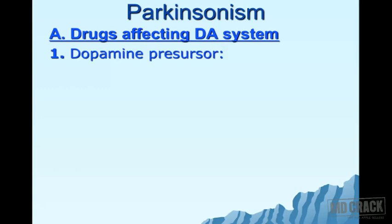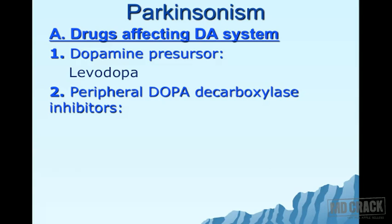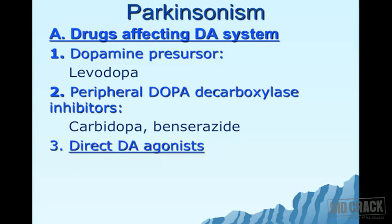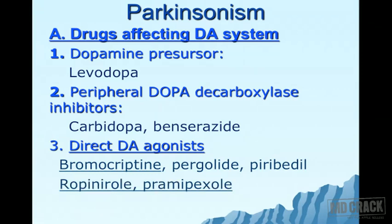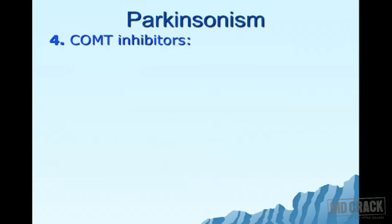Under drugs affecting the dopaminergic system: first is the dopamine precursor levodopa; next are peripheral dopa decarboxylase inhibitors — carbidopa and benserazide; then direct dopaminergic agonists that cross the blood-brain barrier and stimulate dopaminergic receptors — the older ergot agents bromocriptine, pergolide, and piribedil; and newer non-ergot agents ropinirole and pramipexole.